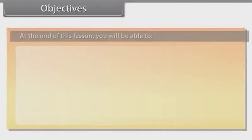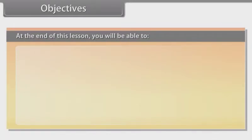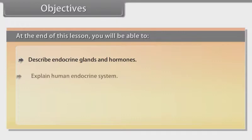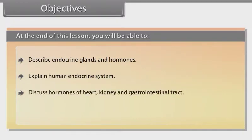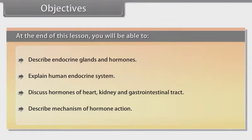At the end of this lesson you will be able to: describe endocrine glands and hormones, explain the human endocrine system, discuss hormones of heart, kidney and gastrointestinal tract, and describe the mechanism of hormone action.